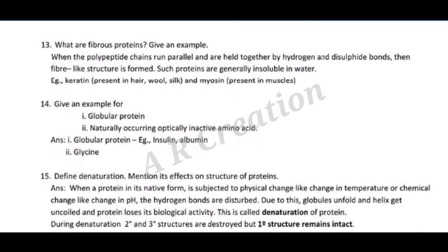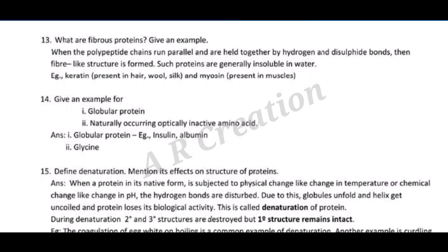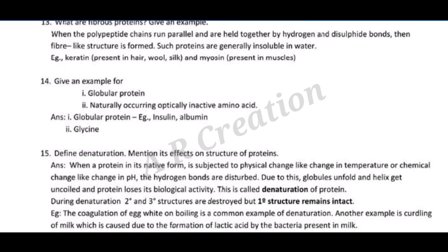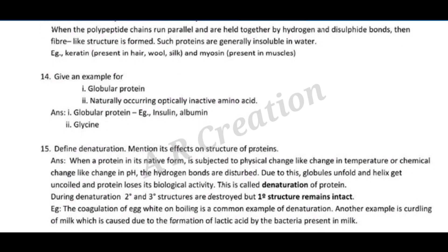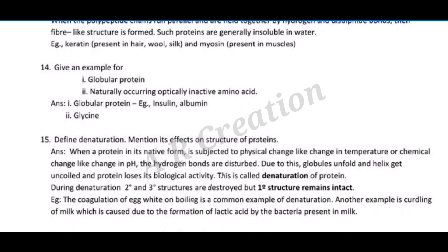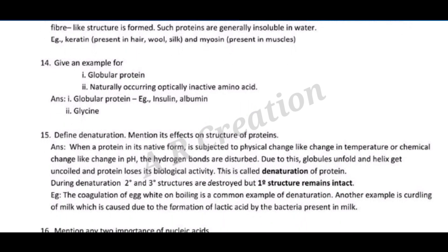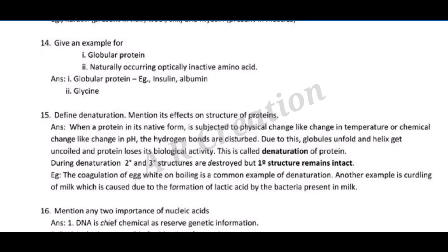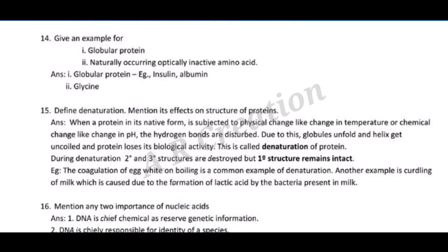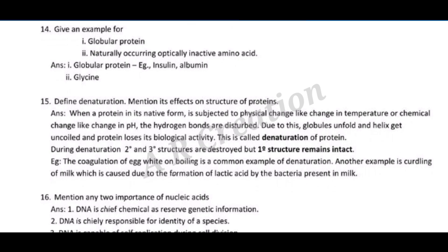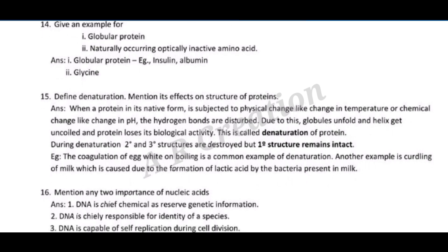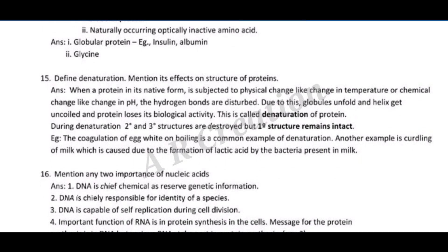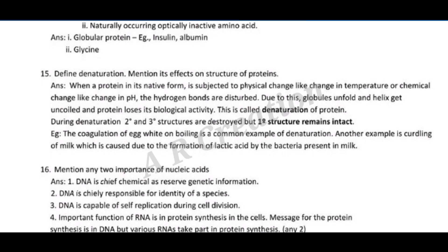(ii) naturally occurring optically inactive amino acid — glycine. Question fifteen: define denaturation and mention its effects on the structure of proteins. Answer: when a protein in its native form is subjected to physical change like change in temperature, or chemical change like change in pH, the hydrogen bonds are disturbed.